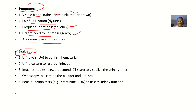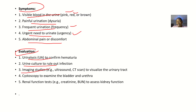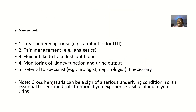For evaluation — that's basically trying to diagnose the disease condition or monitor it. You can do urinalysis just to confirm that hematuria actually exists. You might want to do a urine culture to rule out possible infections. You do imaging studies like ultrasound or CT scan just to visualize the urinary tract. You could do a cystoscopy to examine the bladder and urethra. You also do renal function tests like creatinine, blood urea, and nitrogen just to assess for kidney function.